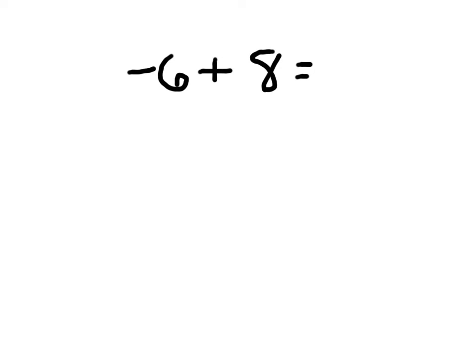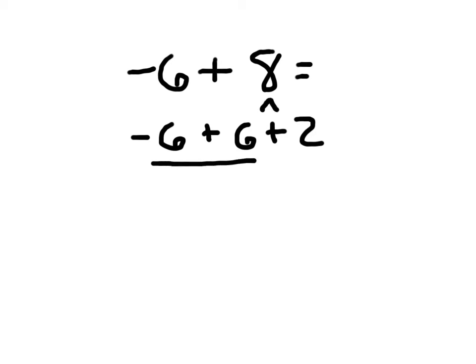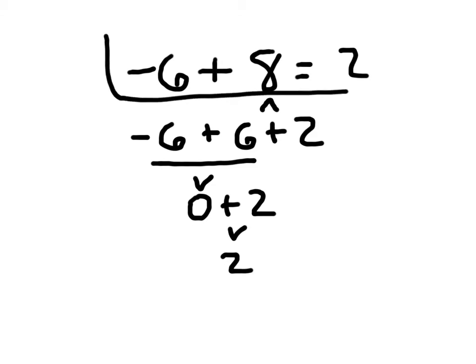Here we have negative 6 plus 8. Using that same approach, the inverse of negative 6, or the opposite of negative 6, would be 6. So we express 8 as 6 plus 2. Negative 6 plus 6 is just 0, and 0 plus 2 evaluates to 2. Negative 6 plus 8 is 2.